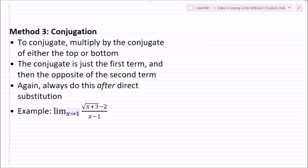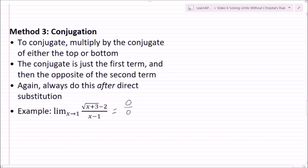Let's look at this example: the limit as x goes to 1 of (√(x+3) minus 2) all over (x minus 1). If I plug this in, I get 0 over 0, so I need to do more work. I can't factor this, so I'm going to try conjugation.